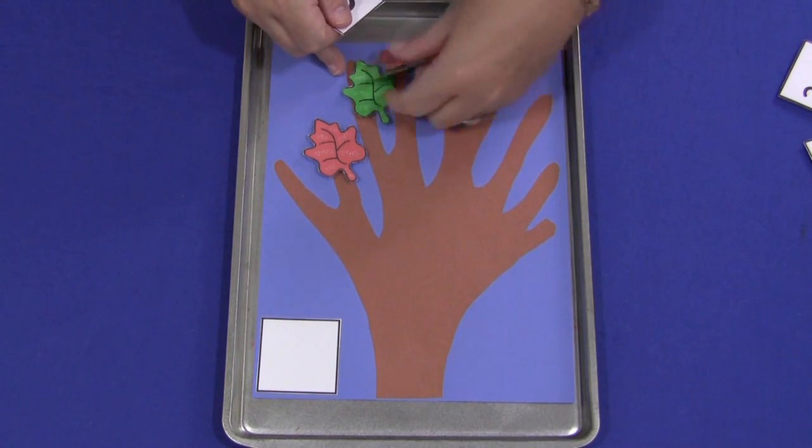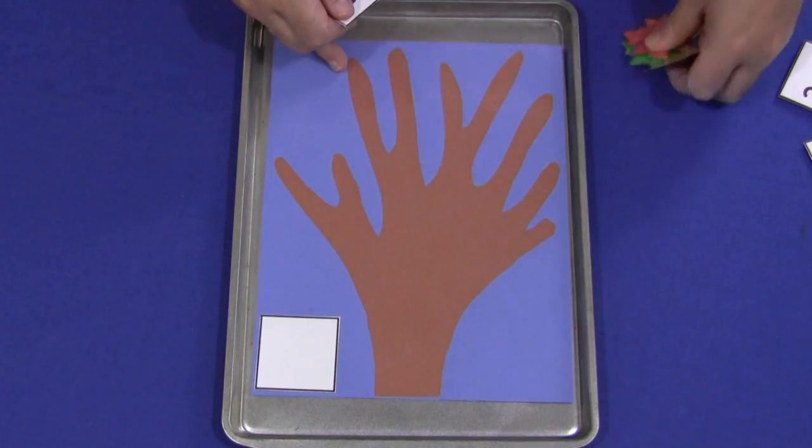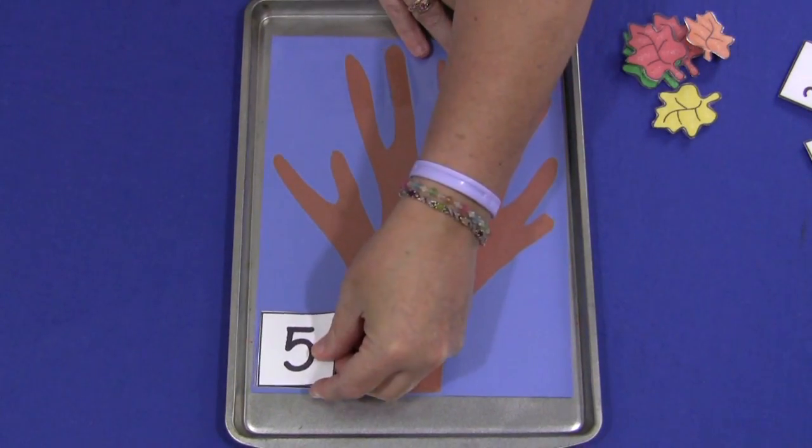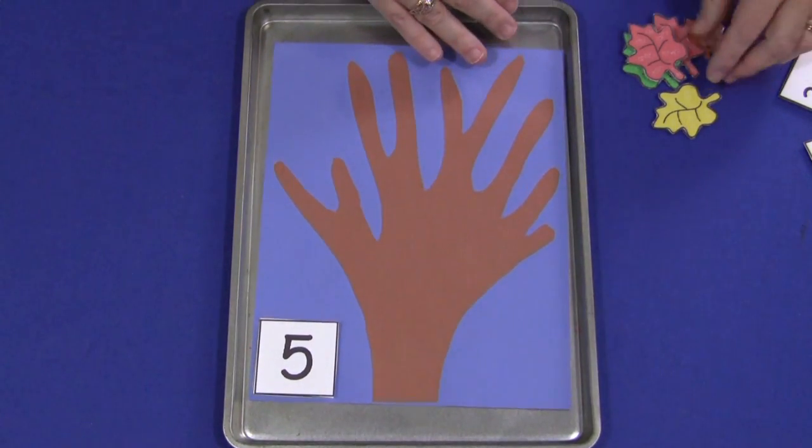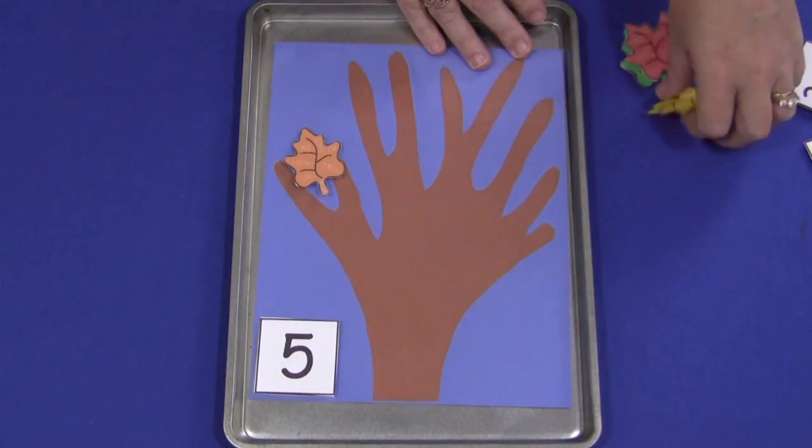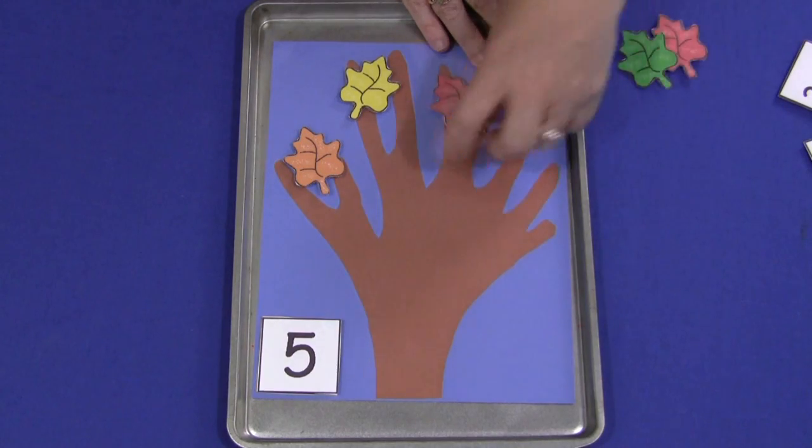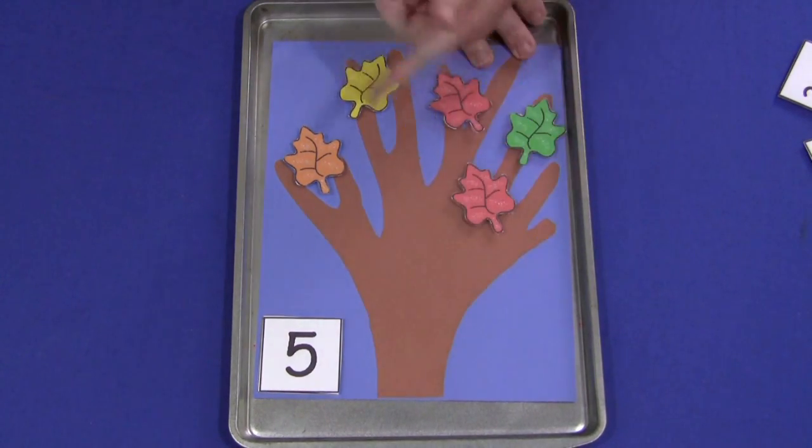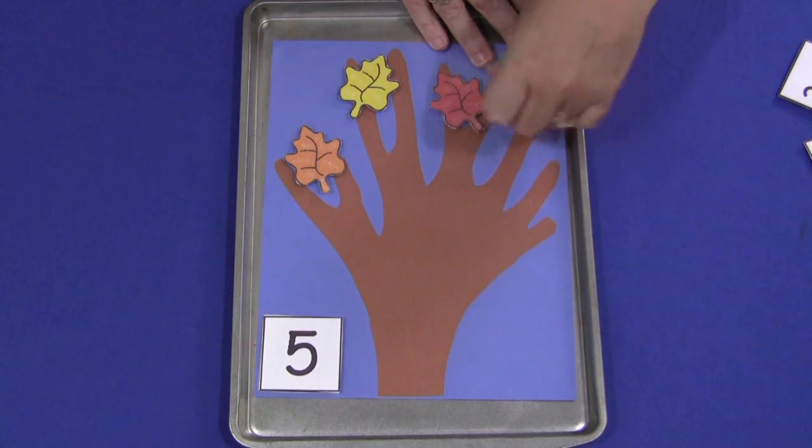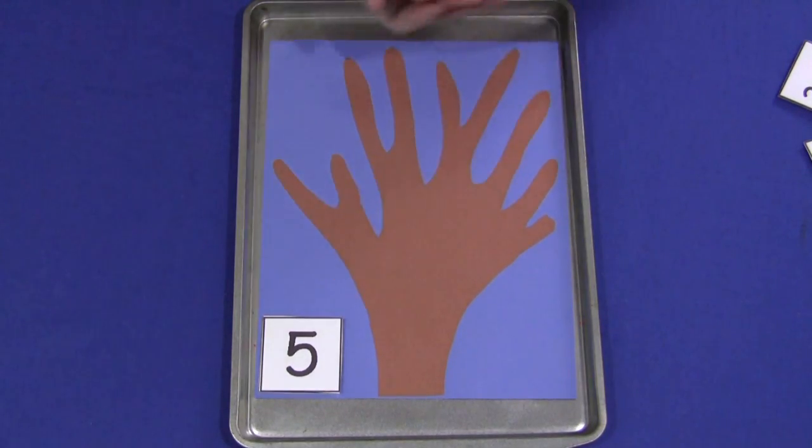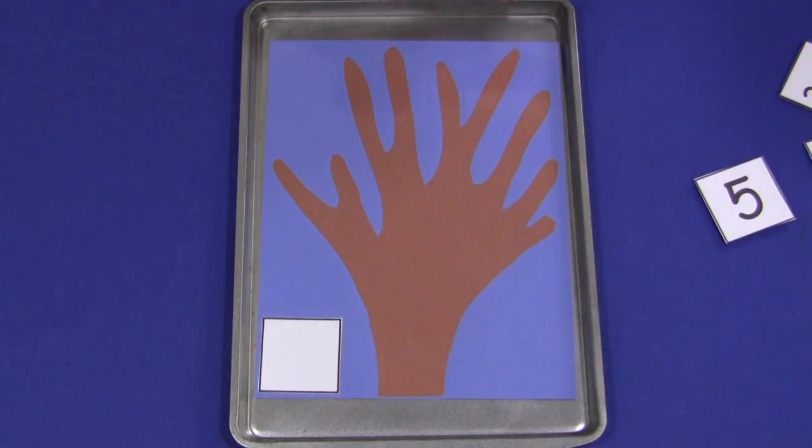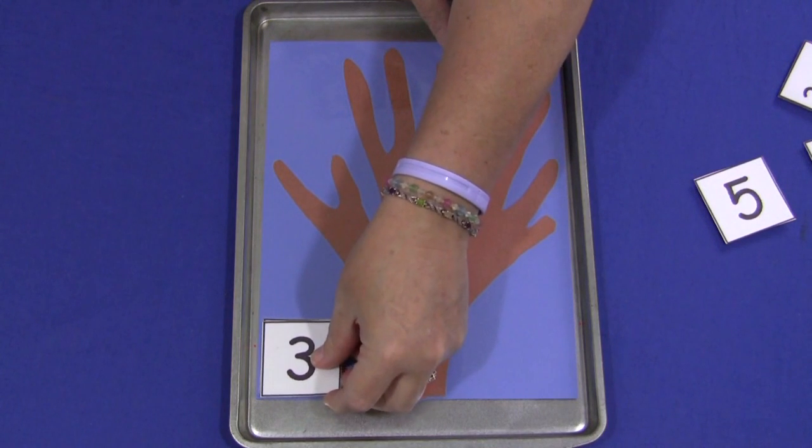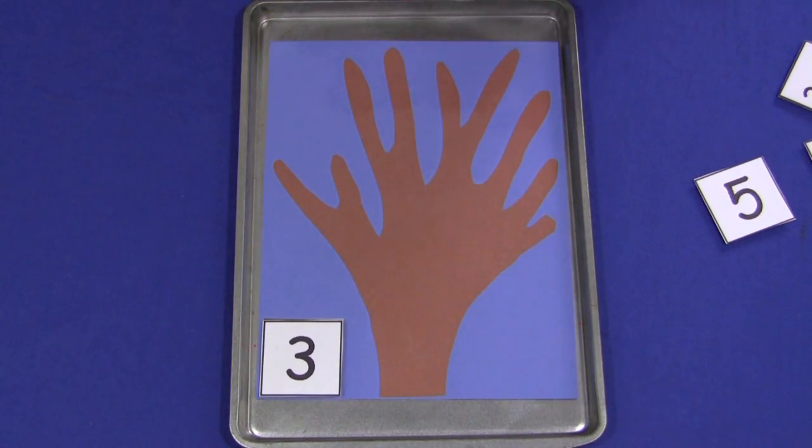What would happen is children would draw a number and then they would place that number in the blank square area, and then they would put the correct amount of leaves on the tree. That one was five. They would take the leaves off and they could put another number on. Again, put the correct number of leaves on the tree.